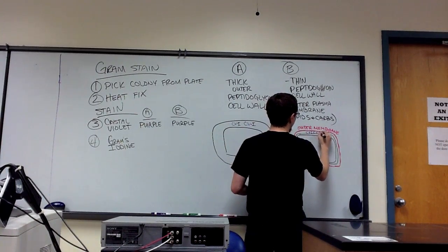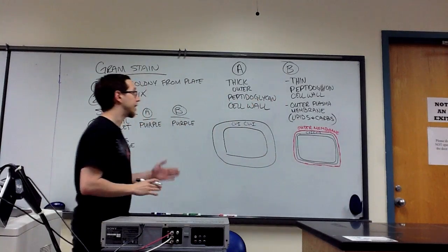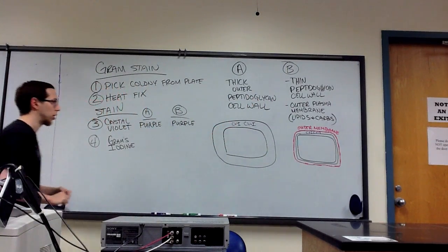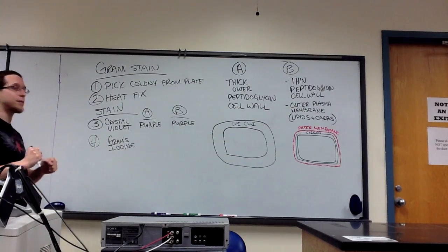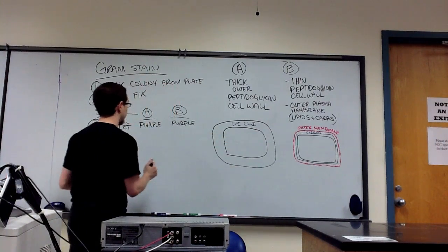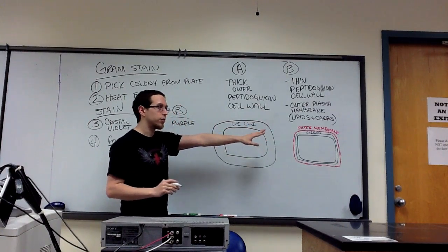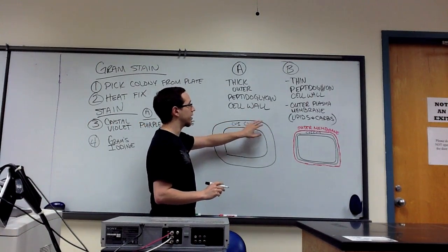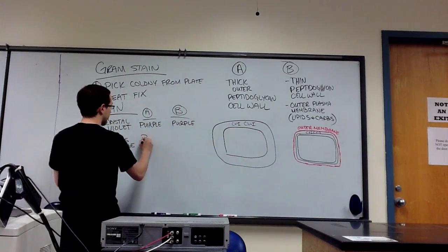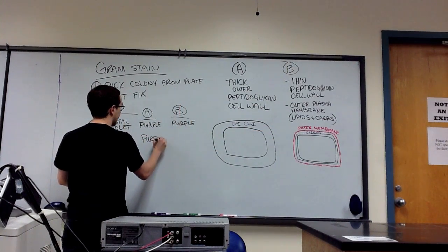The complex, and this hopefully is very apparent, is larger than either the iodine or the crystal violet by itself. And this is going to be a key aspect when it comes to the next step of this. So right now, no alteration to color, but we do have a crystal violet-iodine complex in both instances. So our cells are still going to remain purple for either one of these.